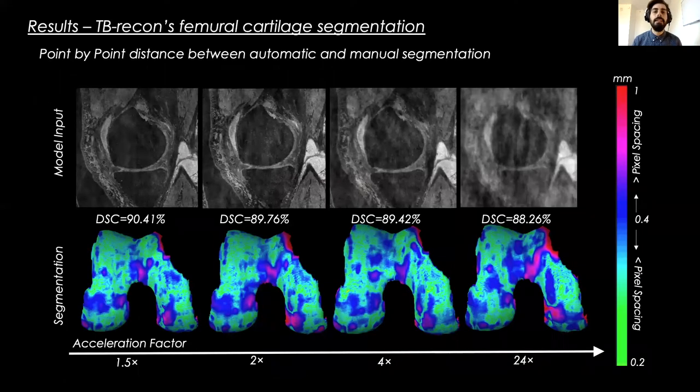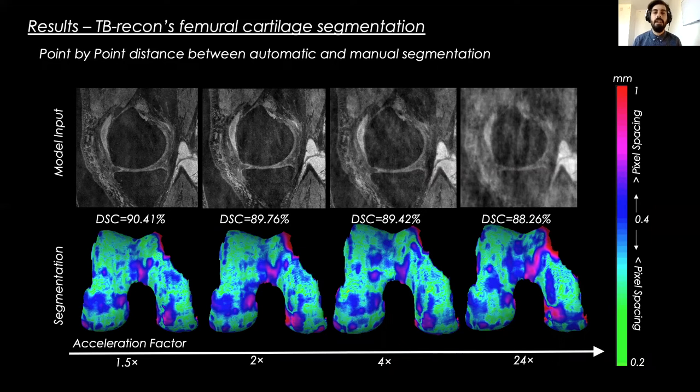This is an example of segmentation performance of the Birecon at different acceleration factors. A point-by-point surface distance between the automatic and the manual segmentation is shown. As we can see, the errors lie within the pixel spacing range.